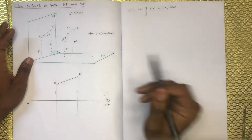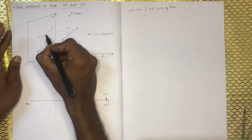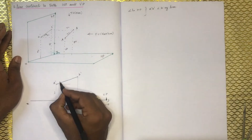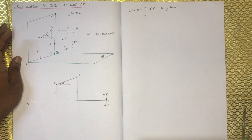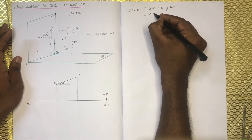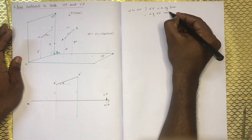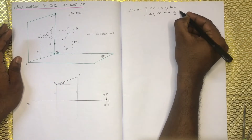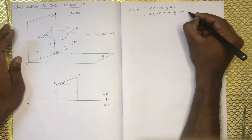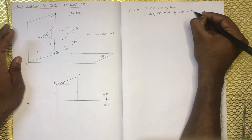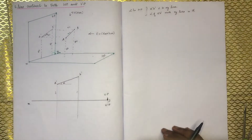A' and B' will have an inclination. If we look at this, there would be an inclination — that is alpha. Here we have an inclination of A'B' with the XY line. That is the elevation, and this is the apparent inclination.